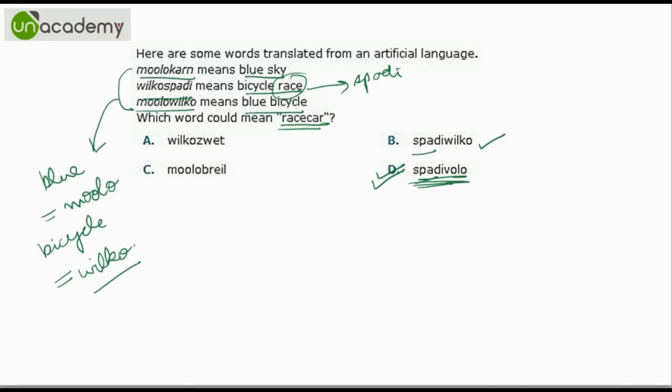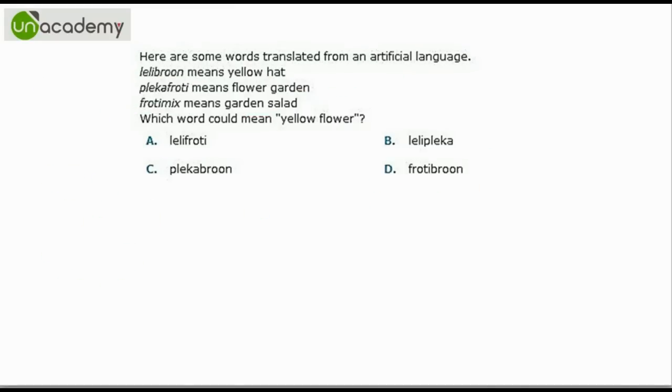Let us look at one more example. Yellow hat has been translated as this. Flower garden is translated as this. Garden salad is translated as this. From these two we can get that garden is F-R-O-T-I. And flower is P-L-E-K-A.